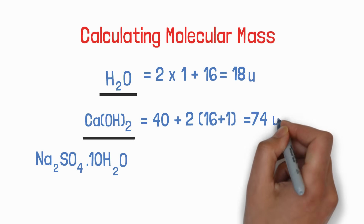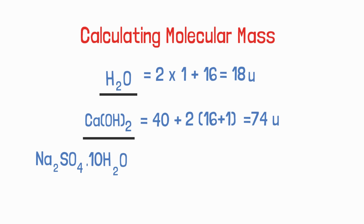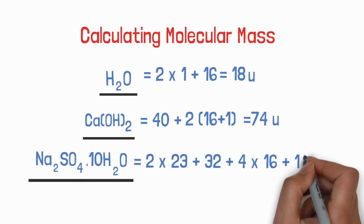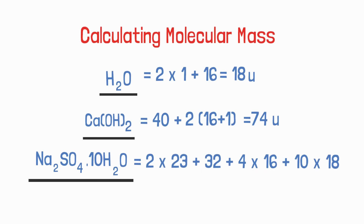Now Na₂SO₄·10H₂O. This contains 2 sodium, 1 sulfur, 4 oxygen, and 10 water molecules. Sodium's atomic mass is 23, sulfur's is 32, oxygen's is 16, and water's molecular mass is 18. So its molecular mass will be (2 × 23) + 32 + (4 × 16) + (10 × 18). You can calculate it yourself — put your answer in the comment section.